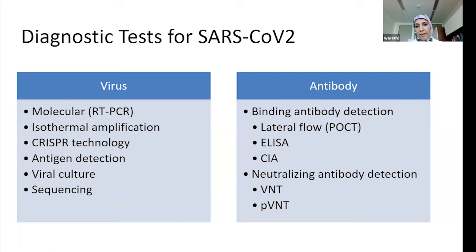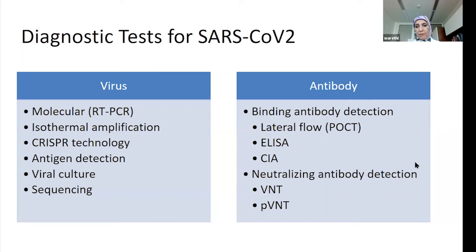For antibody detection, you can classify them broadly into two categories: binding antibody detection methods or neutralizing antibody detection methods. The binding antibody detection includes the classic point-of-care lateral flow assay, ELISA-based, or chemiluminescence platforms. The neutralizing antibody assays are classified into viral neutralization tests, which depend on antibodies neutralizing live virus and are done in very specialized BSL-3 laboratories. Dr. Sheehan will talk further about neutralizing antibodies and their role in COVID infection.